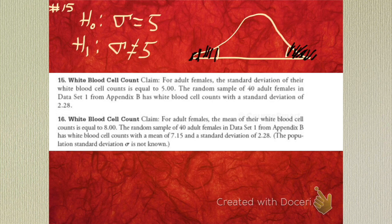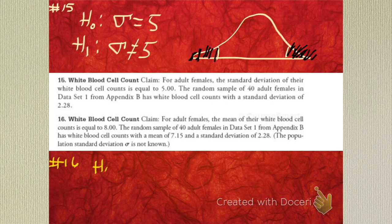Let's do 16. We're setting up our null and alternative. In 16, the claim is, for adult females, the mean of their white blood cell count is 8. What's our null? Mu. Because we're doing averages or means, we're dealing with mus. So our null is mu equals 8.